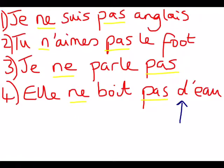Pause the video again and think to yourself how you would translate these sentences into English. OK, so: 'Je ne suis pas anglais' — I am not English. 'Tu n'aimes pas le foot' — you don't like football. 'Je ne parle pas' — I don't speak. And 'elle ne boit pas d'eau' — she doesn't drink water. Just be aware that 'de l'eau' changes to 'd'eau', because whenever we use the negative we always just use 'd'' afterwards. So whereas in the first sentence we had 'elle boit de l'eau', when we put the 'ne' and the 'pas' in, it simply changes to 'd'eau'.